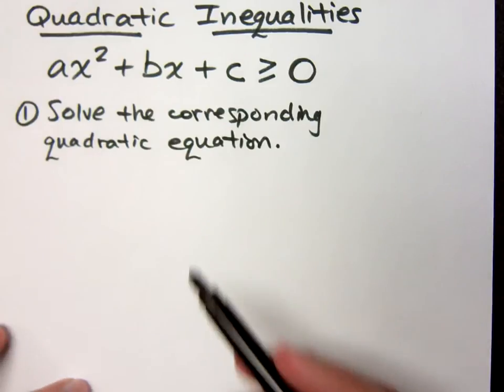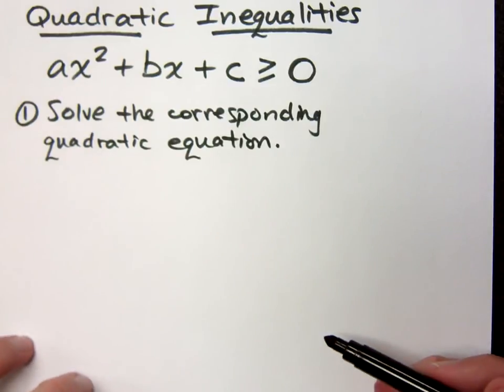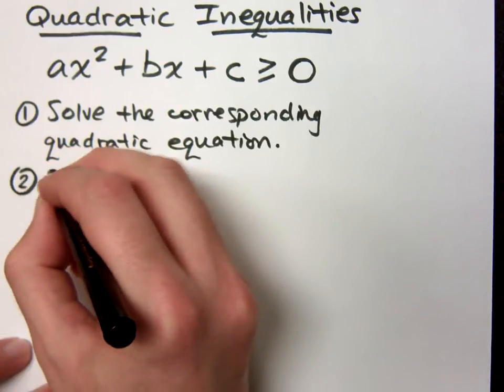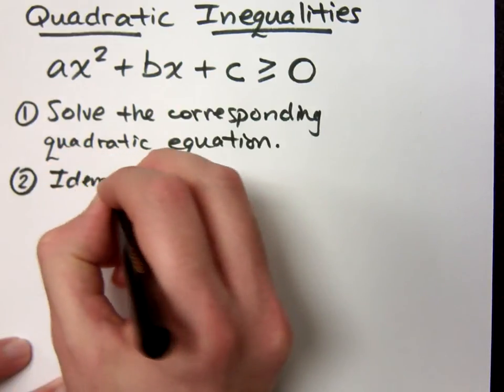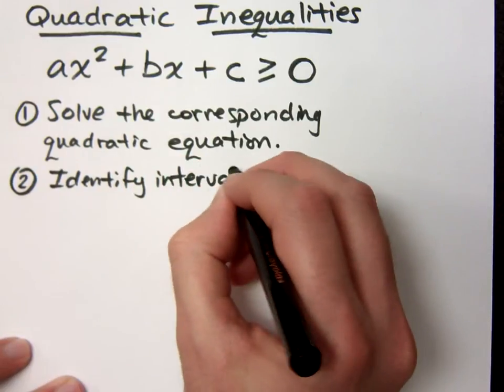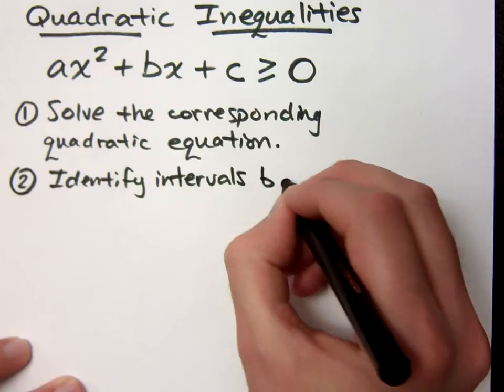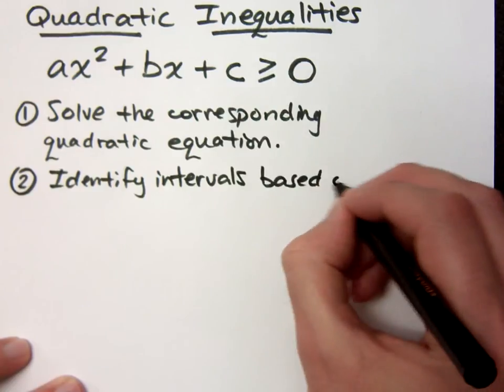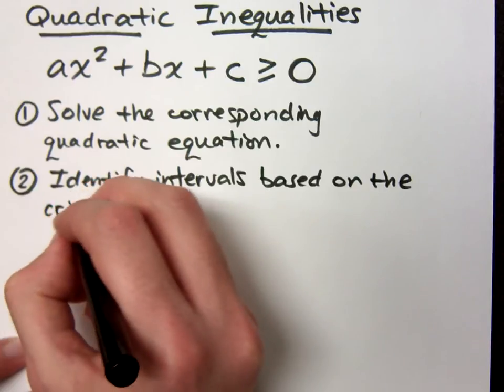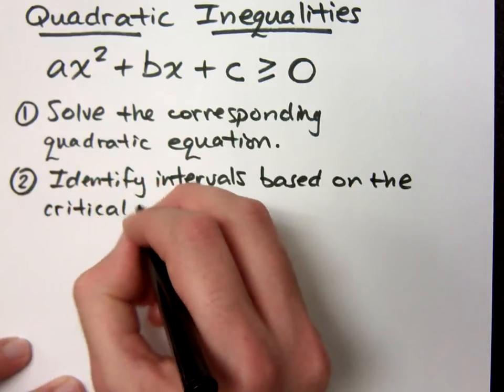So basically, you rewrite this as an equation and solve it. And then when you do that, you will identify intervals based on the critical values that you got from step one.